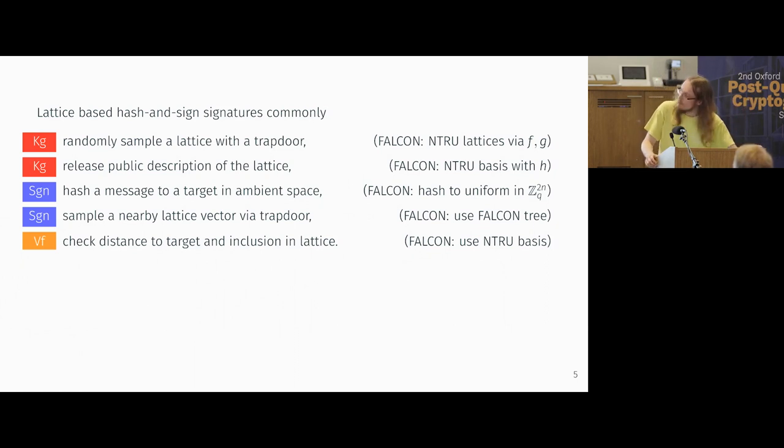But that's enough about the actual performance of HAWC. I want to explain to you how it works by analogy to something that I hope more people are familiar with, which is a more conventional lattice-based hash and sign signature such as Falcon. So the framework we have here is in key generation, you sample some lattice alongside a trapdoor. So this is the NTRU trapdoor of these small elements, f and g usually. You release some public description of the lattice via a bad basis.